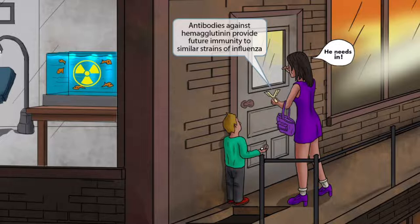Since hemagglutinin is needed to enter the host cell, antibodies against it would confer immunity. This is here to help you remember that the immune system can produce antibodies against hemagglutinin, which can provide future immunity to similar strains of influenza.